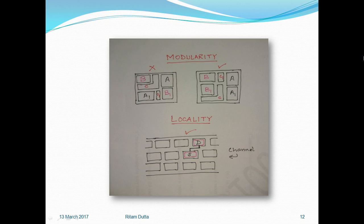Suppose in a box there is A and A1, where A1 is a submodule of target object A. Then it is a very bad placement, which is shown on the left side.